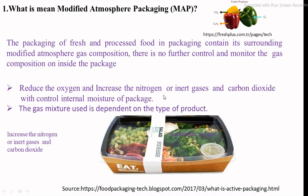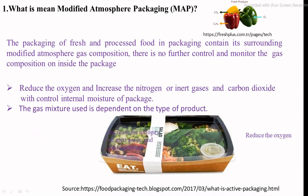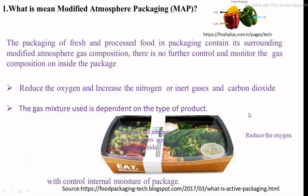Depending on the specific type of that product, oxygen, carbon dioxide or inert gas, and internal moisture level are controlled. You can see in this picture: during packaging of respiratory and non-respiratory foods, internal oxygen is reduced by the modification process, then addition of inert gas or carbon dioxide, and also required to control the internal moisture content of that packed food.